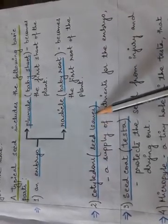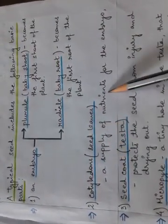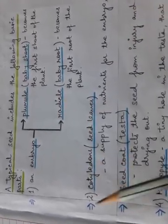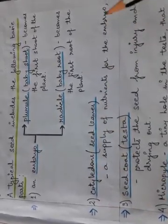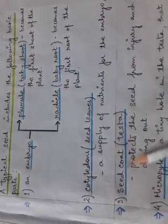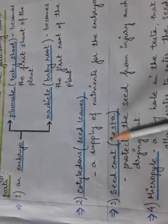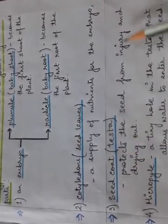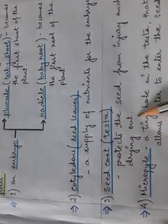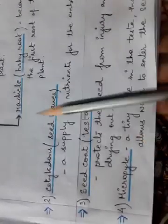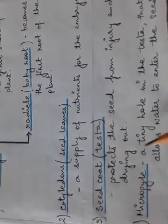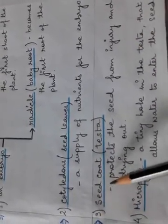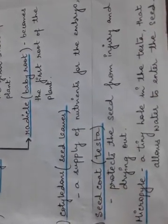Then there are cotyledons, also called seed leaves, which supply nutrients for the embryo. The seed coat, also known as the testa, protects the seed from injury and drying out. And the micropyle is a tiny hole in the testa, or seed coat, that allows water to enter the seed.